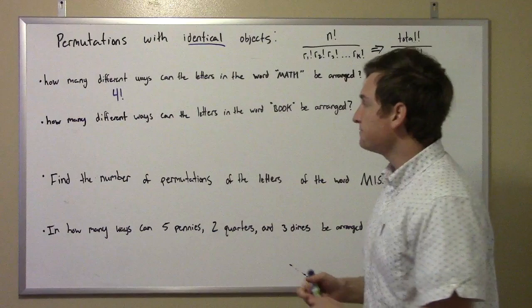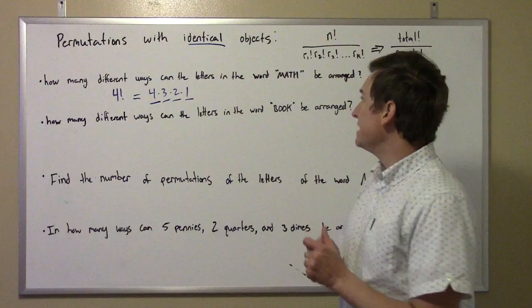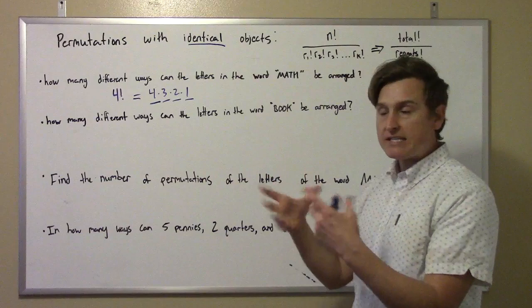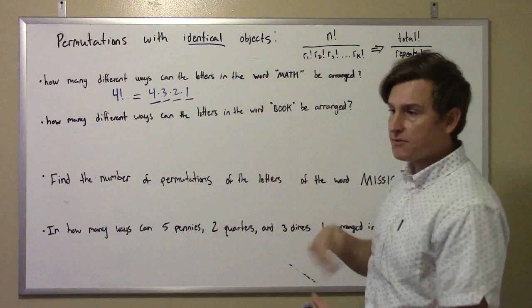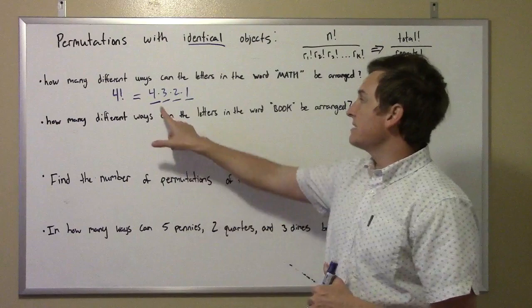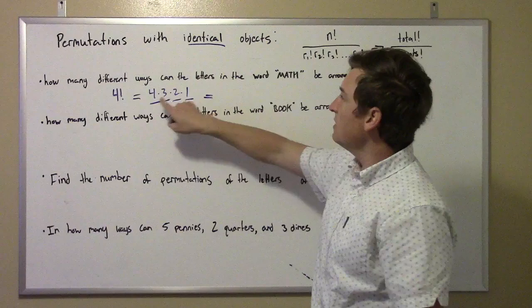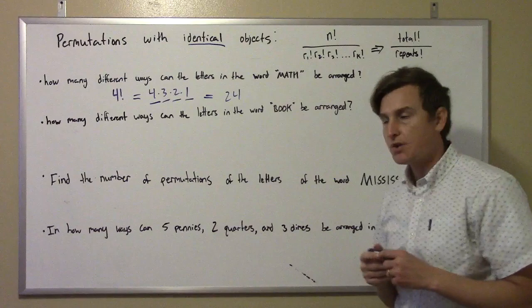So four factorial is equal to four times three times two times one. The fundamental counting principle applies here. If you're trying to make arrangements of this word, for the first letter you have four different choices. But as soon as you choose one of those letters, you only have three choices, then two, then one. So these are all different events — choosing the first letter, the second, the third, the fourth. This gives us four times three is twelve, times two is twenty-four, times one is twenty-four. So there are twenty-four ways to do that.